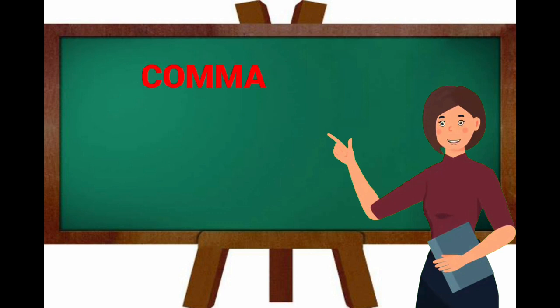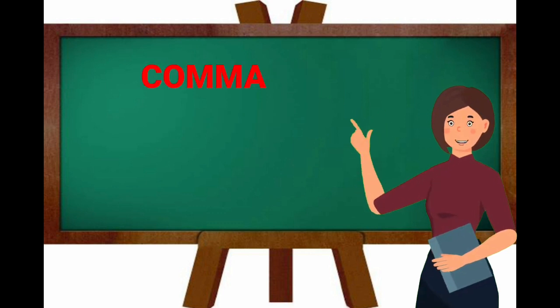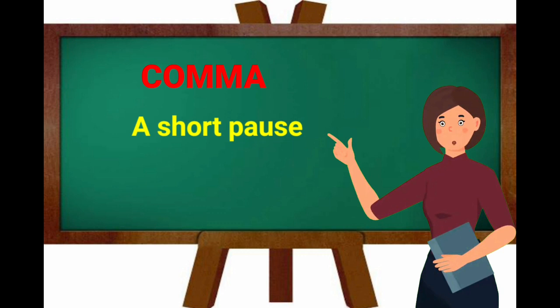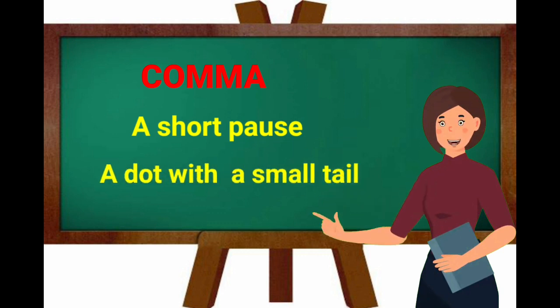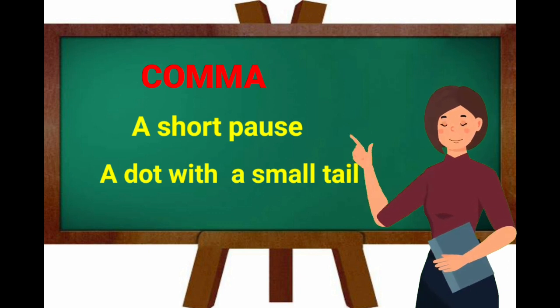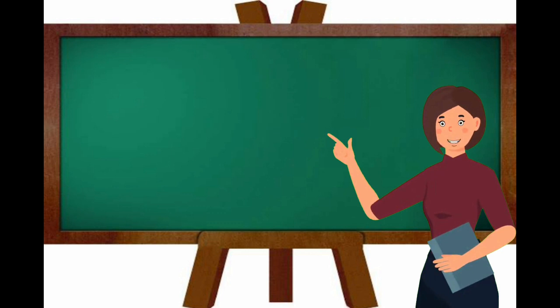Next, comma. Comma is a short pause within a sentence or after a clause. It means the writer is talking about two or more things in the sentence. A dot with a small tail is used as comma symbol. For example,